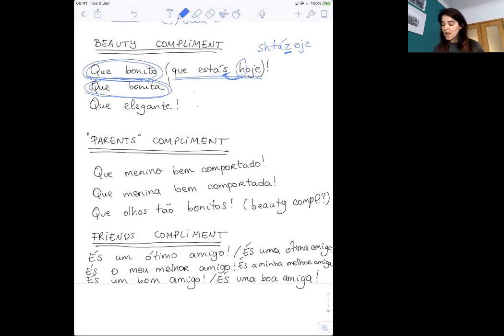You can also say que elegante—that's more like 'how elegant'—if you want to tell the person that they look really nice in that outfit, for example, that they look really elegant. So you can say que elegante, or faster, que elegante. We tend to put these two together and say something like que elegante. When we have an 'e' plus an 'e,' we tend to transform it into a Portuguese 'i,' so que elegante. How elegant.